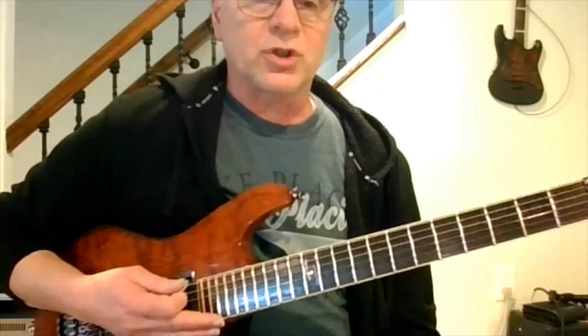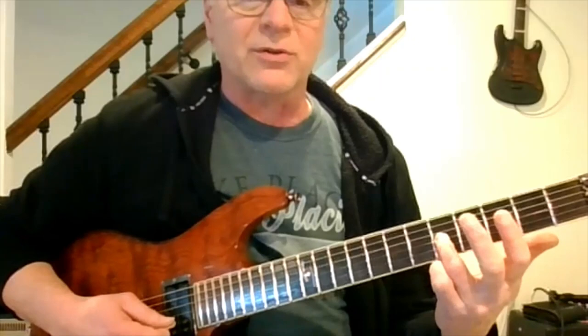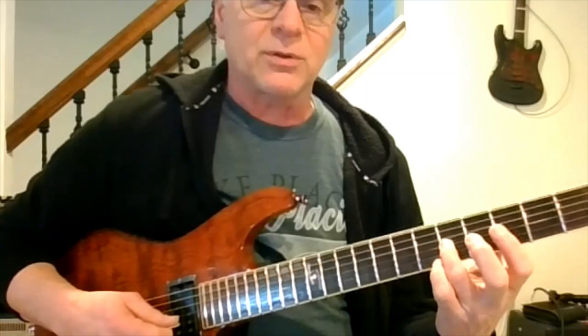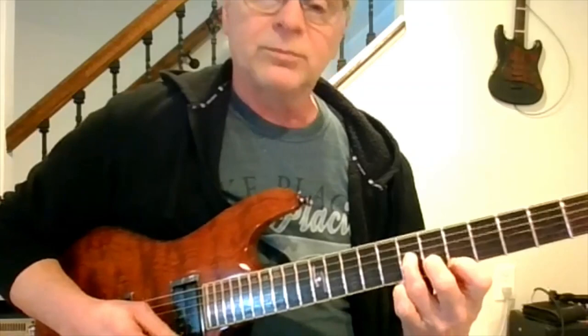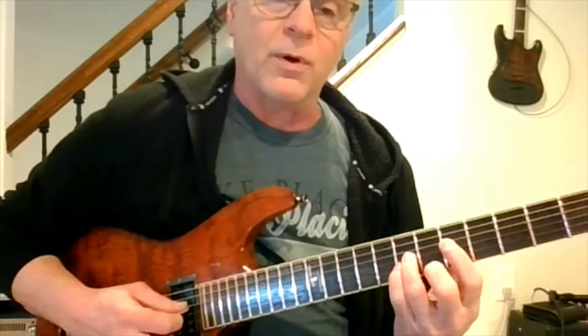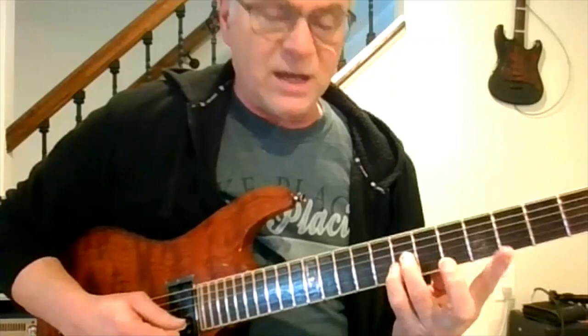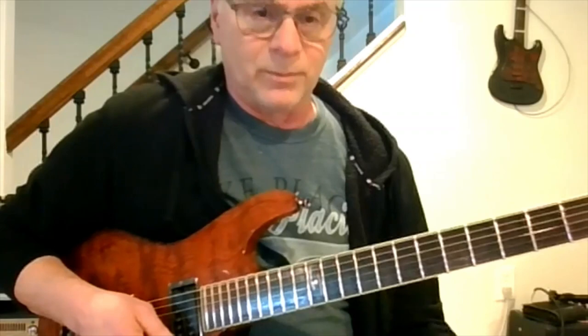So practice those shapes. And the next thing you need to do is remember if that's our C or root, anywhere we move this, these seven shapes will determine the name of those triads. So if that's my C, if I move it up to D, then we have a D major triad, D minor, D diminished, D augmented, so on and so forth. D sus two, D sus four, D major flat five. You should take those shapes and move them up and down the neck until you get very familiar with them.